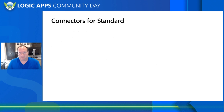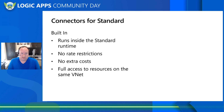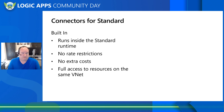Let's talk for a moment about connectors for standard edition. There are three types of connectors, two of which we'll talk about here. First off is built-in connectors — these run actually inside the standard edition runtime. With these, there's no rate restrictions, and there's no extra cost outside of your hosting environment to run these connectors. So if you're running these locally, there's no cost at all to execute them. They also have full VNet access to all resources on that same VNet, which means if you have SQL Server running in your same VNet, you'll be able to access it just like a local resource.